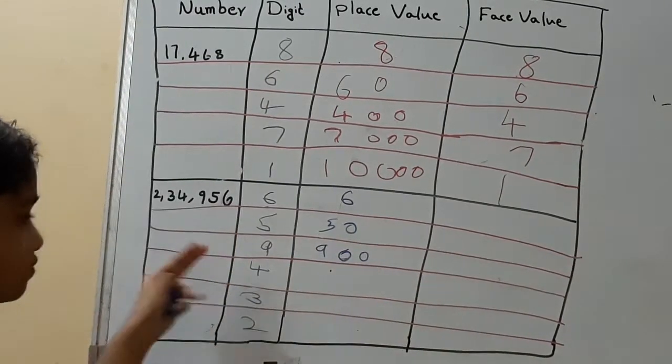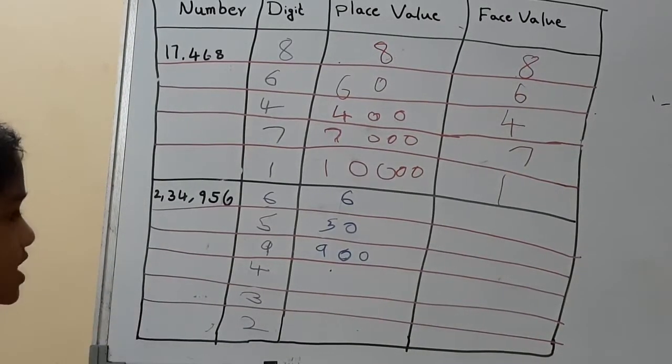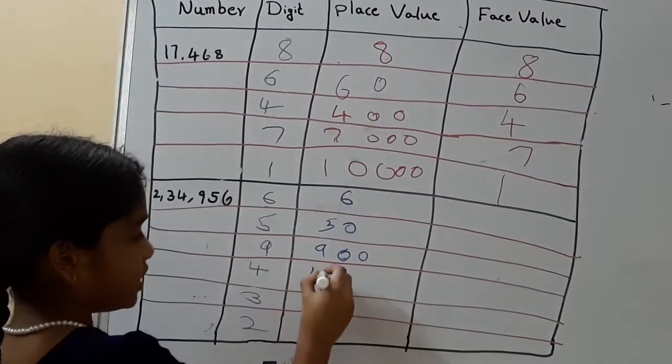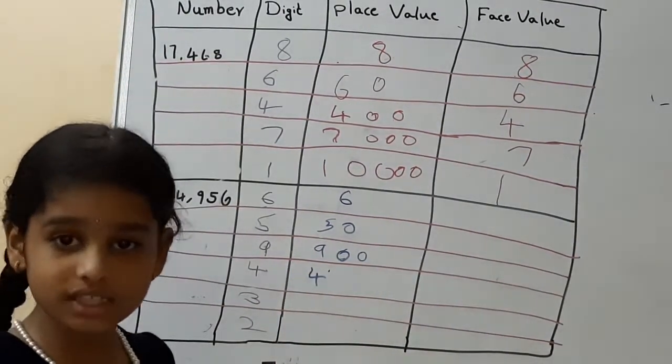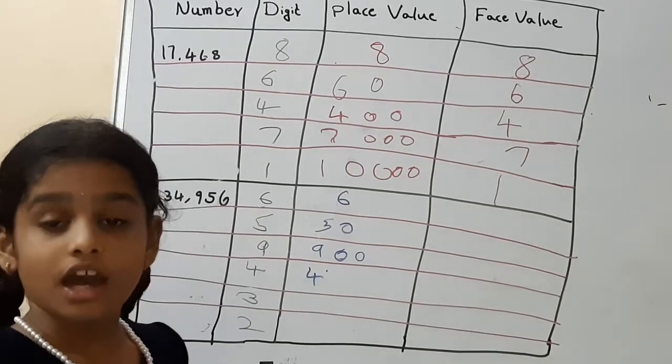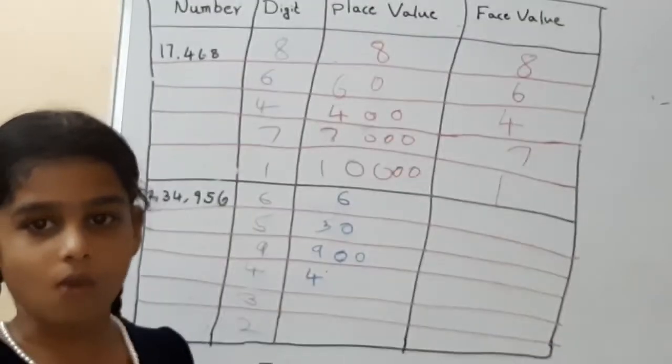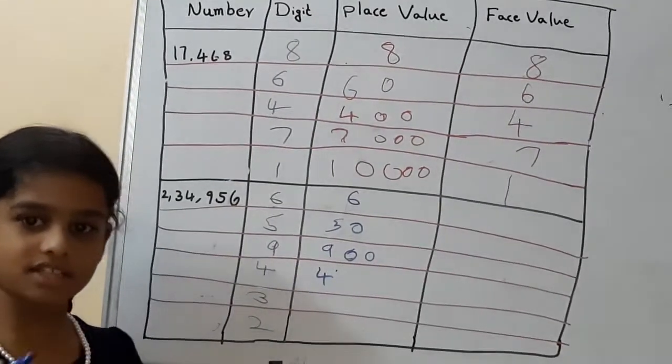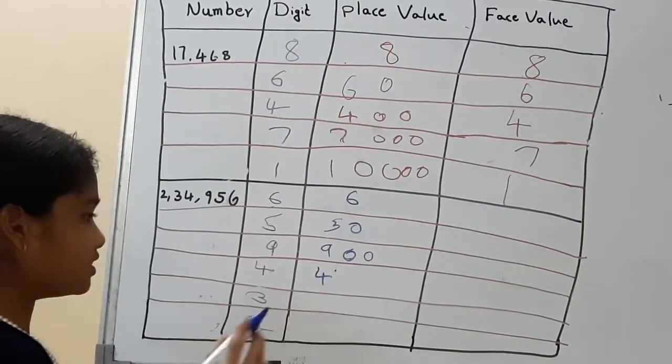So for 4. 4 is in which place? 1,000th place. So in 1,000, how many zeros are there? 1, 2, 3. In 1,000 we have three zeros. And so keep three zeros.